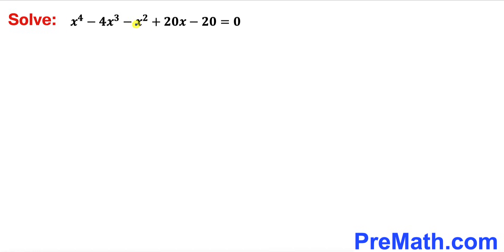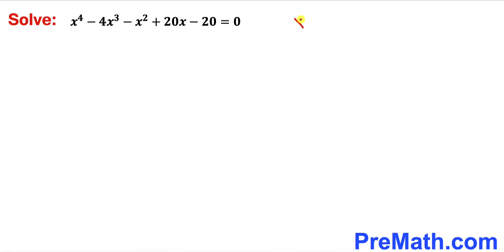In this video we are going to solve this given quartic equation: x⁴ minus 4x³ minus x² plus 20x minus 20 equals 0. Our task is to find the value of x.